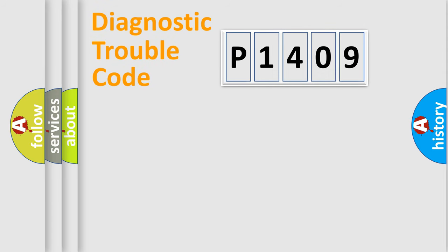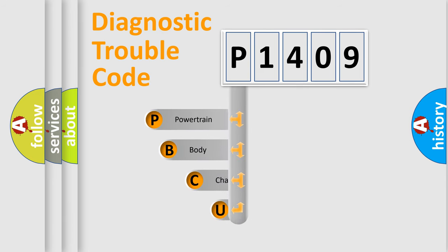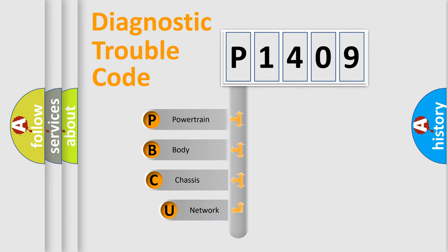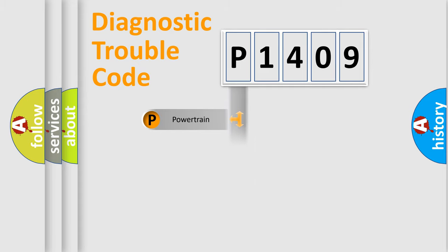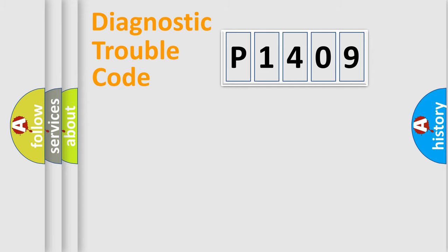Let's do this. First, let's look at the history of diagnostic fault code composition according to the OBD2 protocol, which is unified for all automakers since 2000. We divide the electric system of an automobile into four basic units: Powertrain, Body, Chassis, and Network.